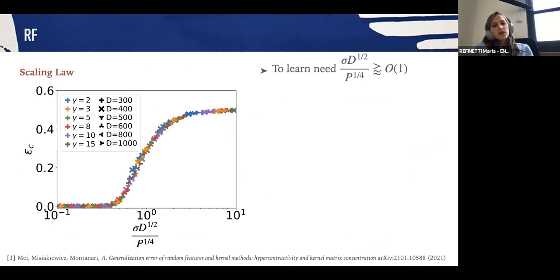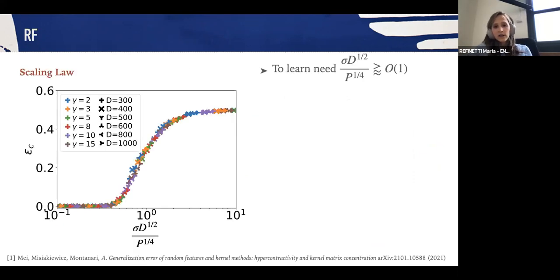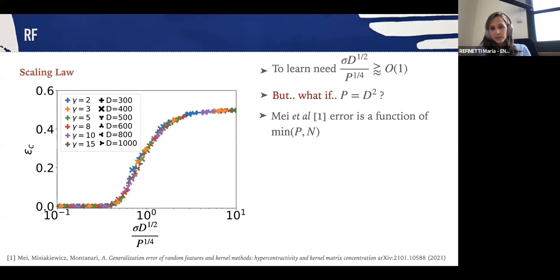We went a bit further than that and also analyzed how the error scales with the relevant quantities in the problem. What we found is that the classification error is a function of noise times the square root of the input dimension divided by the number of features to the power one-fourth. One may ask, okay, but if I take the number of features that scales as the input dimension squared, then maybe random features will be able to learn. However, we know from a recent result of Mei and colleagues that the error is actually a function of the minimum between the number of features and the number of samples. Therefore, if we want the random features to be able to learn this mixture, we need the number of examples that scales as the input dimension squared, and this regime is not accessible by our thermodynamic limit in which the number of samples is taken to scale linearly with the input dimension.